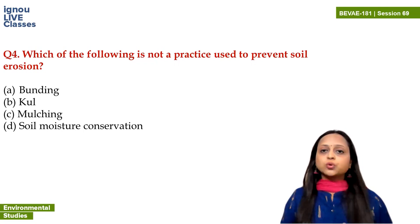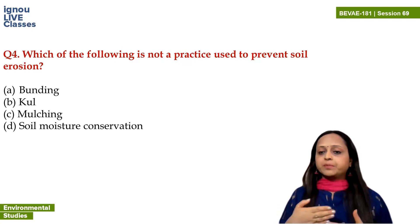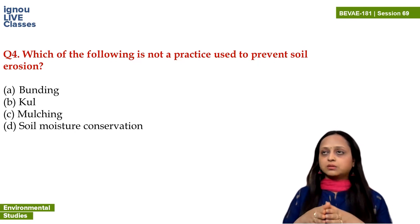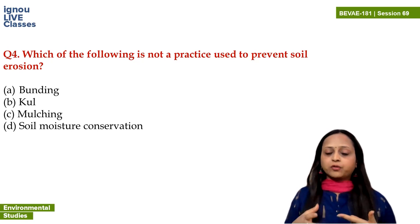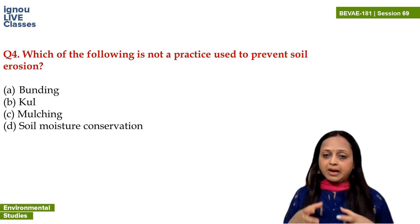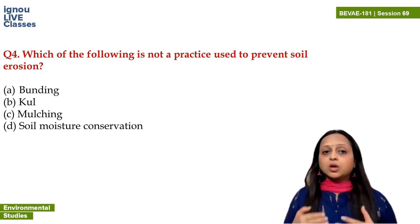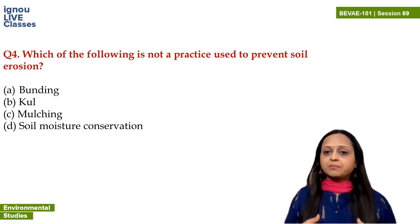Which of the following is NOT a practice used to prevent soil erosion? Bunding basically means building a wall-like structure around the agricultural field — it can be made of soil. Bunding serves two purposes: during rainfall it does not let water flow out, and second, it does not let the soil erode with water. Kul (कुल) is basically a method of water harvesting — it involves diverting a natural water body, like a river, to use that water for irrigation in your agricultural field.